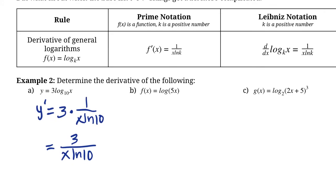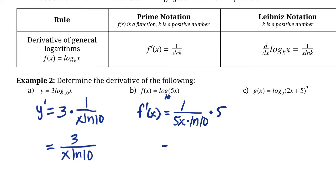Pause the video and try the next questions yourself. For f prime of x with log of 5x — when no base is shown, we assume base 10. Using the chain rule: 1 over 5x times ln 10, then multiply by the derivative of the inside, which is 5. These 5s cancel out, giving 1 over x·ln 10.